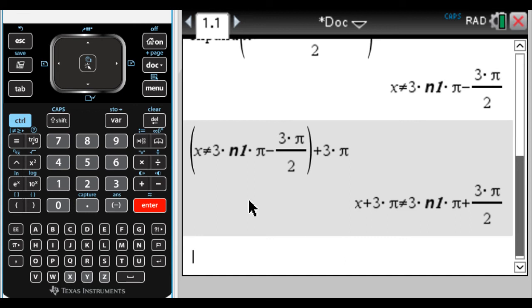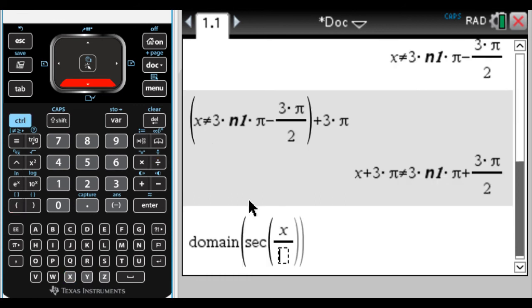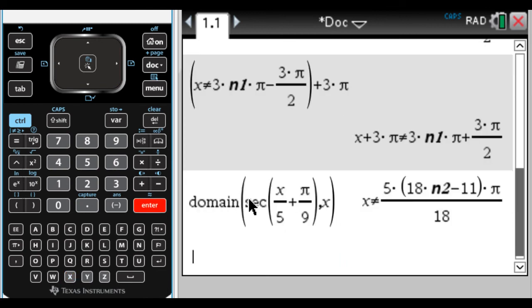And just to show you what happens, if I do it again, so domain, let's do the domain of the secant of x over 5 plus π over 9. And balance out, comma, x. So this, again, it's kind of ugly.